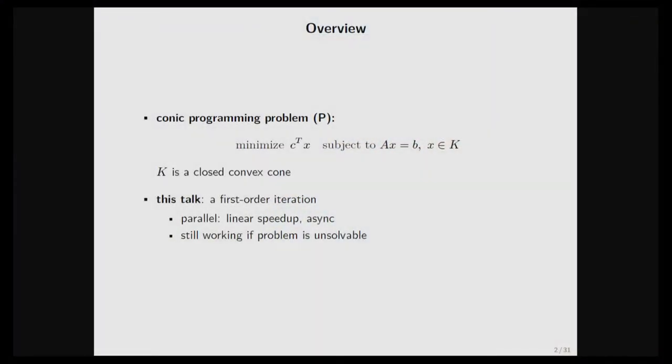The model is very similar to the previous talk except here we're assuming convexity. This K is not a generic non-empty convex set — it's a cone. It's a closed convex cone, and you're not going to see distributed settings in this talk, though lots of the techniques can be generalized. If your variable X or data A is distributed, you can make certain changes to matrix A to refit the algorithm into the distributed setting. This talk gives you a first-order iteration with two interesting properties: it parallelizes with linear speedup as theory indicates, and it can also run asynchronously.